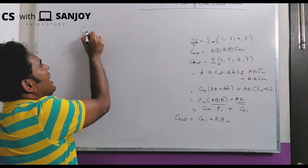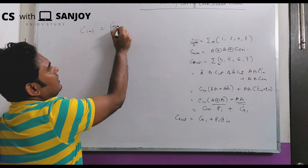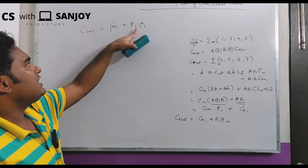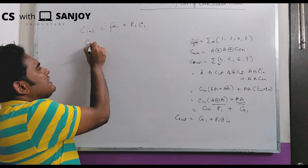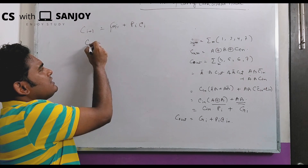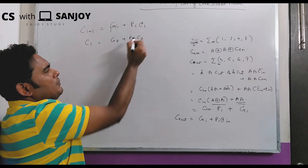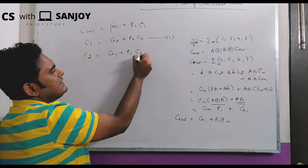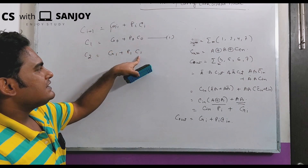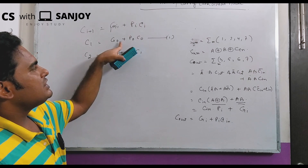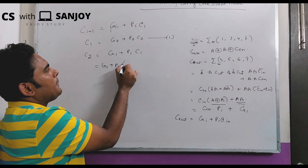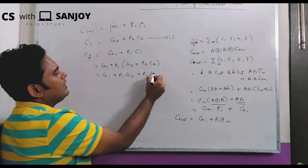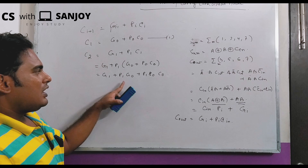Using C_{i+1} = G_i + P_i · C_i, with C0 as the initial carry: C1 = G0 + P0·C0. For C2 = G1 + P1·C1, substituting C1: C2 = G1 + P1·G0 + P1·P0·C0. This is equation 2.